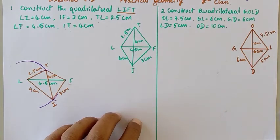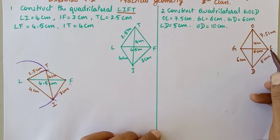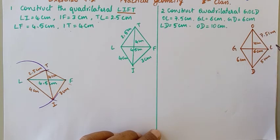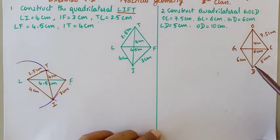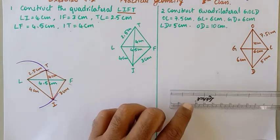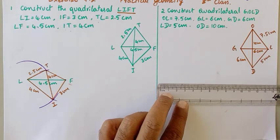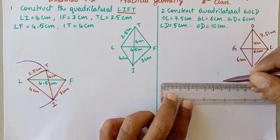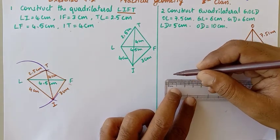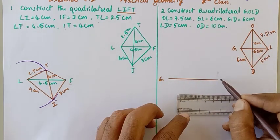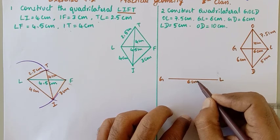I will start with GL. GL measures 6 cm. I have drawn GL where G is one endpoint and L is the other, measuring 6 cm.